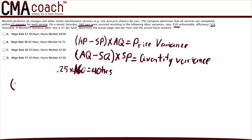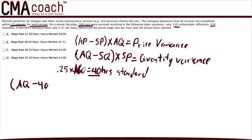We have all the values for the quantity variance formula except for actual quantity, so we'll solve for that first. Plugging into the formula: open parentheses, AQ minus standard quantity (which is 40), close parentheses, times 7 (the standard price) equals negative $14 — the favorable variance.